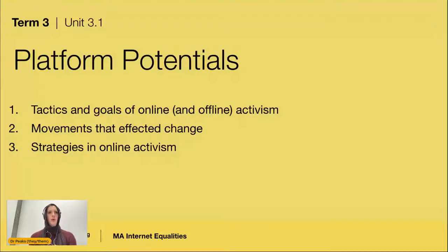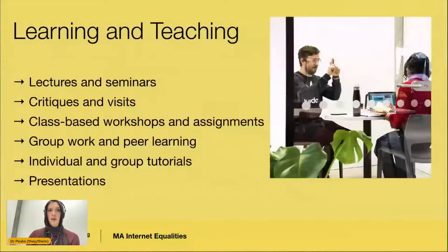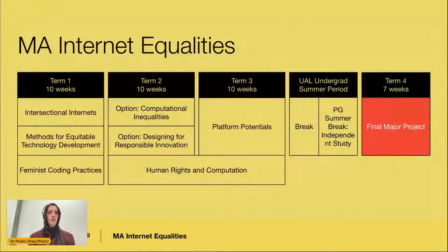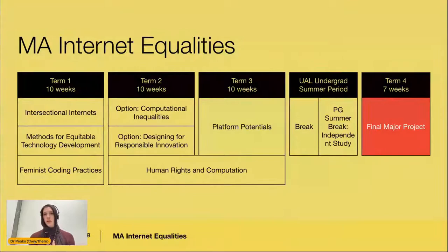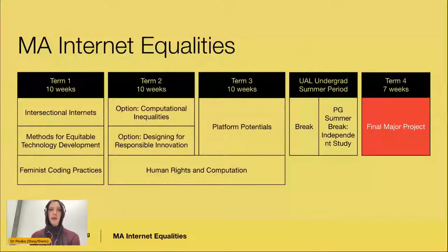The final taught unit in term three is Platform Potentials, focusing on the role of internet platforms — such as social media or mobile apps — in activism, and how corporations, states, and organizations use these platforms, examining challenges and potential from the perspective of platform studies. The final term involves the student thesis and research project, which can take many forms — video output with written reflections, coding as research with reflections, or a social science research project. This is driven by the student's own interests and what they'd like to do for their independent work to cap off the program.